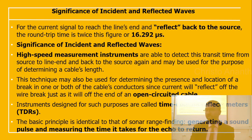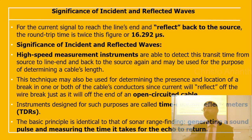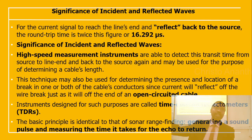The instruments used for this purpose are called time domain reflectometers, or TDR. The basic principle is similar to sonar — sound navigation and ranging. You generate a sound pulse and measure the time it takes for the echo to return.